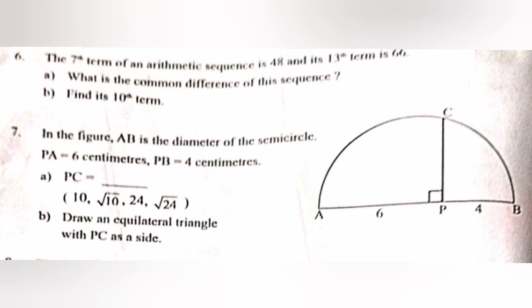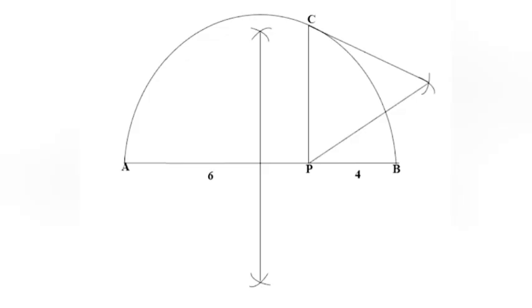Question 7: In the figure, AB is the diameter of the semicircle. PA equals 6 cm, PB equals 4 cm. Part A: PC equals? Answer: √24. Part B: Draw an equilateral triangle with PC as a side.